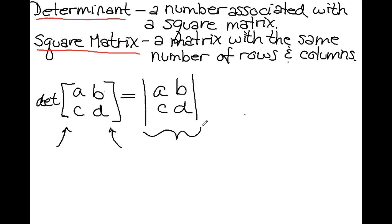And you can see why you cannot drop these little hooks at the end. Because if you do, it means to take the determinant of the matrix. So please, make sure that you use the square brackets when you're talking about a matrix. Use the straight lines when you're talking about a determinant.